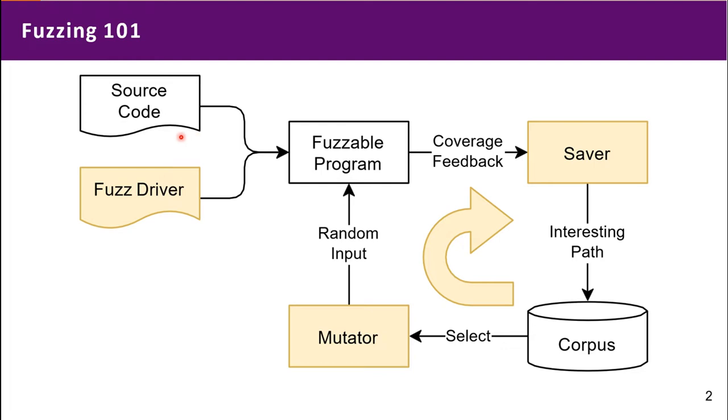In userspace, we first compile source code and fuzz travel so we get a fuzzable program. Then we select input from corpus and mutate it, and feed the input to fuzzing process. Based on the feedback, we continuously update corpus. This workflow works very well in userspace fuzzing.